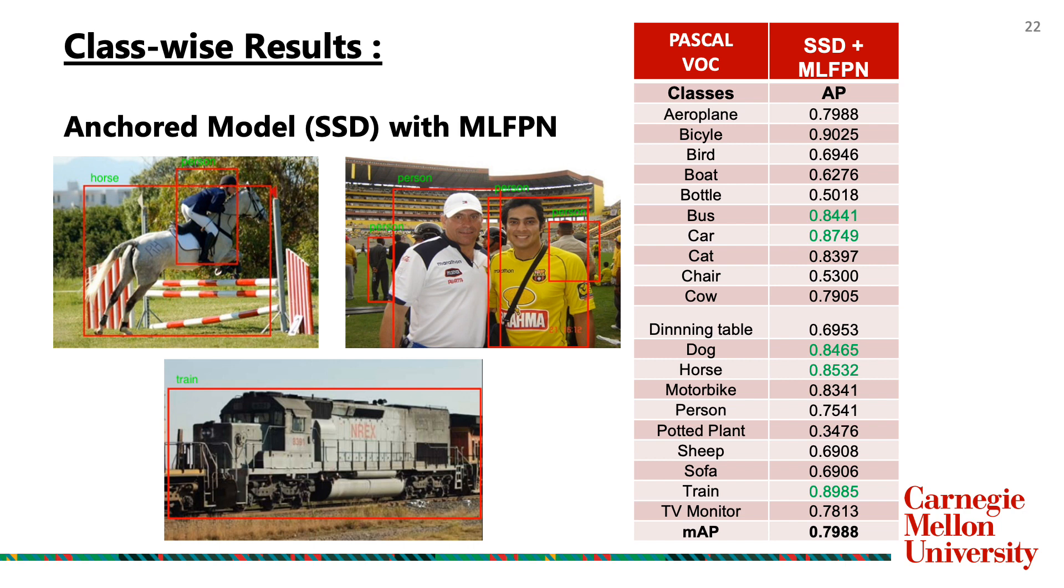For our third experiment, we combine the SSD anchored model with the MLFPN. On doing so, we achieve an mAP of 0.7988, which is an improvement of 4.75% over the model combined only with the FPN. This goes to show that indeed the MLFPN is able to extract better semantic and spatial features with increased depth in the network compared to just using the FPN.